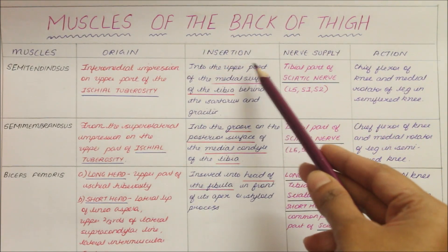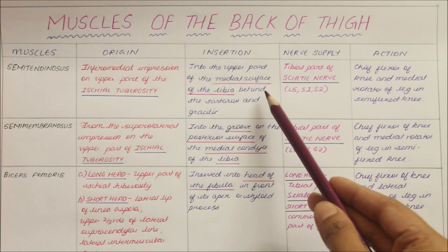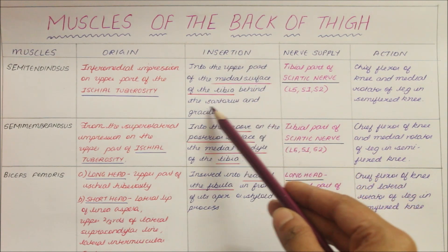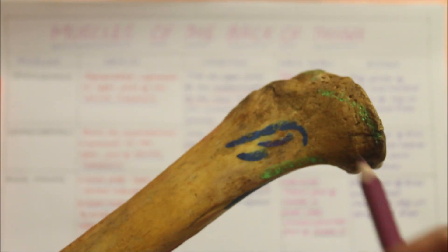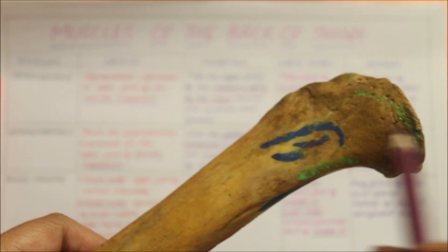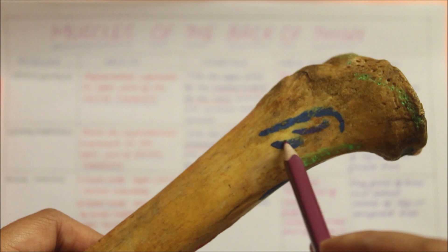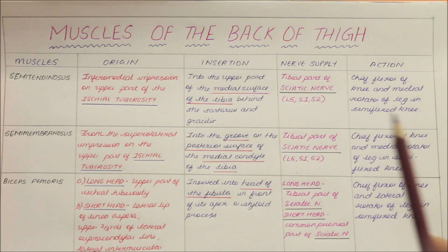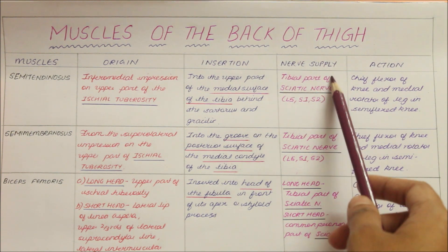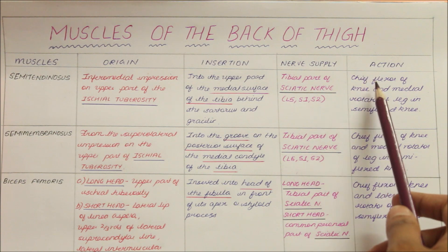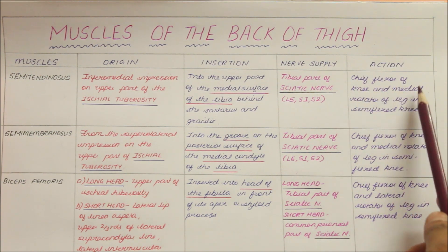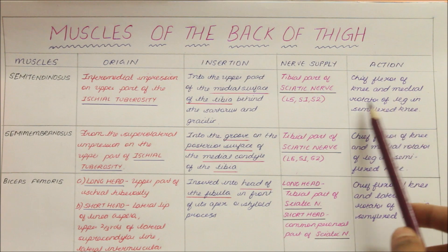The semitendinosus inserts into the upper part of the medial surface of the tibia behind the sartorius and the gracilis muscle. This is the right tibia. The semitendinosus muscle inserts right here. It is supplied by the tibial part of the sciatic nerve, and its action is that it is a chief flexor of the knee and medial rotator of the leg in the semiflexed knee.